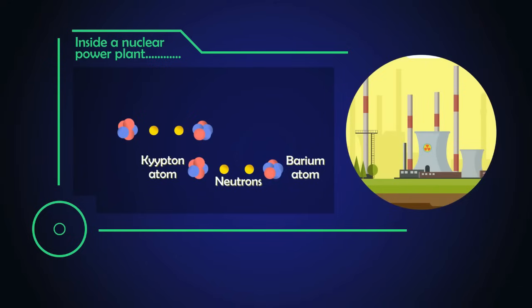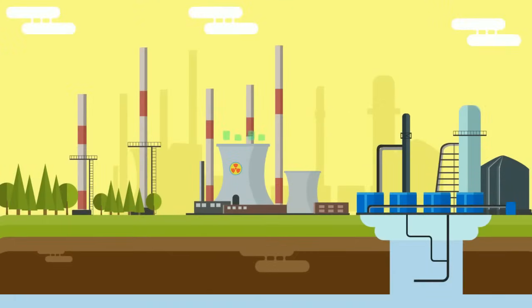If this reaction is in controlled levels, the energy produced is also in a controlled manner. This is what happens in nuclear power plants, where this controlled energy is used to generate electricity. If the reaction is uncontrolled, we get a nuclear explosion.